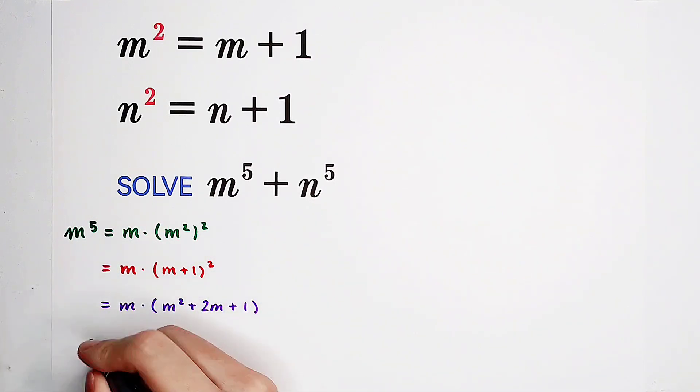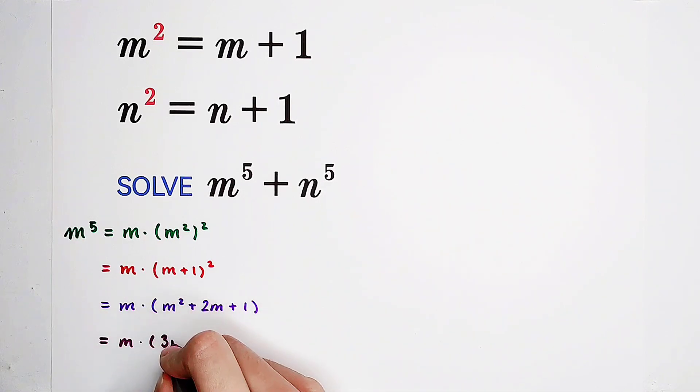Now m squared appears again, we hate that. So substitute m plus 1 for m squared. So m plus 1 plus 2m plus 1, so it is 3m plus 2.